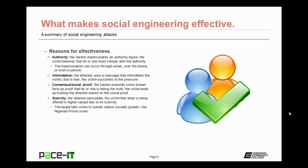The hacker may rely upon consensus or social proof. The hacker presents some known facts as proof that he or she is telling the truth, and the victim ends up trusting the attacker based on the social proof or consensus.